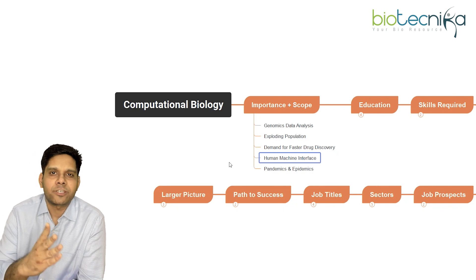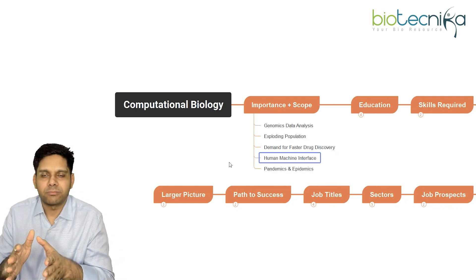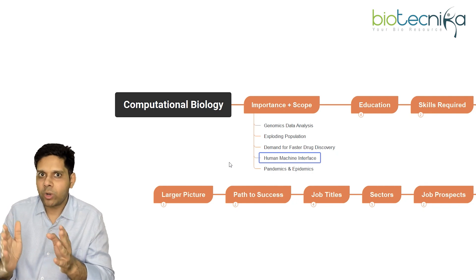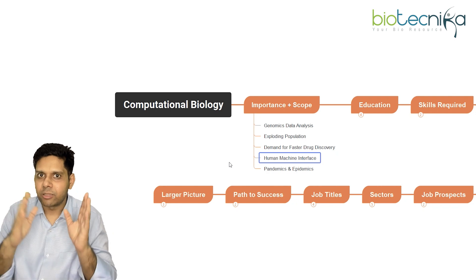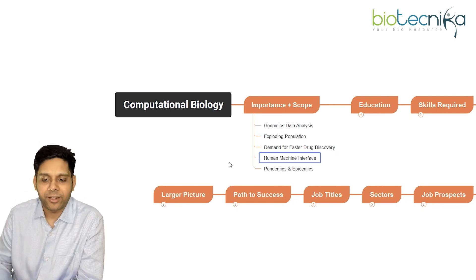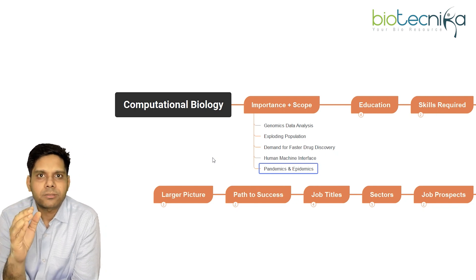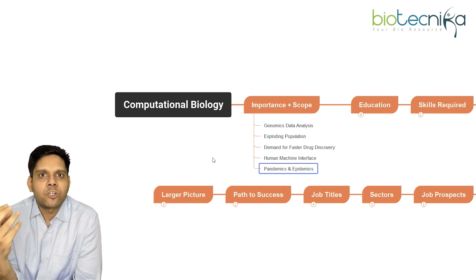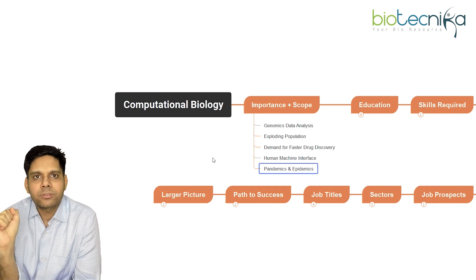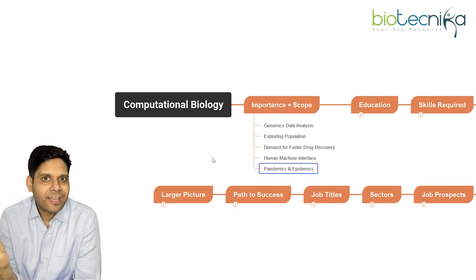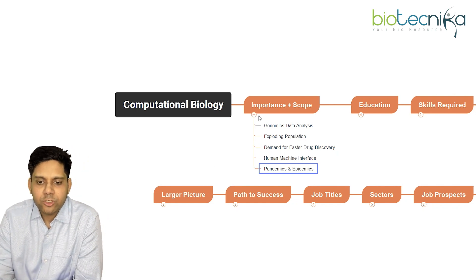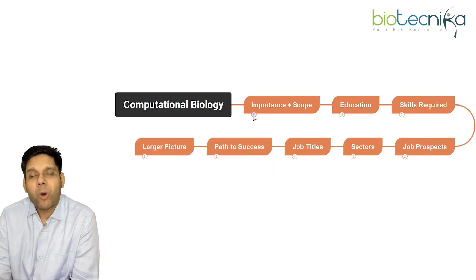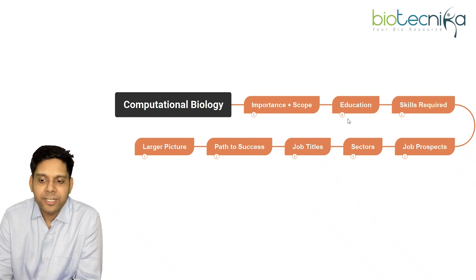Next is human-machine interface. You must have heard of Elon Musk and the brain-machine interface they're developing — tomorrow this could be the new normal, requiring more computational biologists and neurologists. Pandemics and epidemics are happening everywhere, demanding more application of computers in biology. In fact, the Moderna RNA vaccine was designed inside a computer and not in a lab. These are the pointers which highlight how important and scopic this field is going to be in the future.